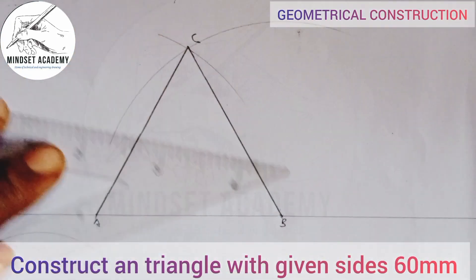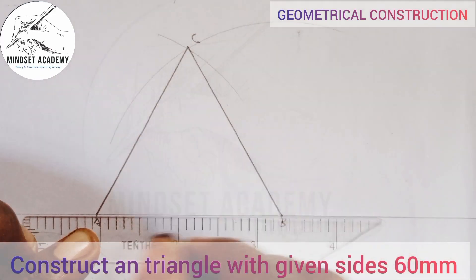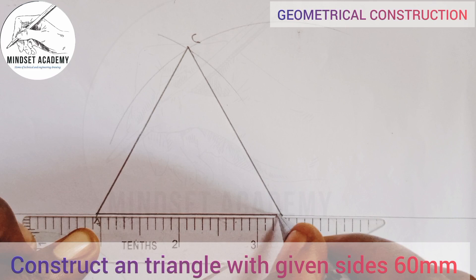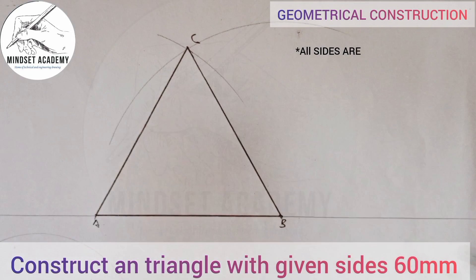Then I'm going to close up A to B this way. So this is my equilateral triangle. Now we say an equilateral triangle has all its sides equal, so it means that if I should measure the distance from this point to this point it will be equal to 60.